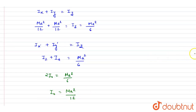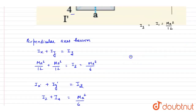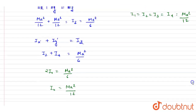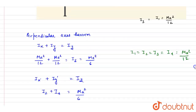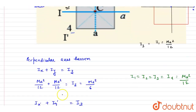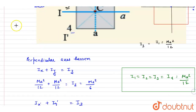So basically I₁ equals I₂ equals I₃ equals I₄ equals ma²/12. The moment of inertia about all four axes — axis 1, 2, 3, and 4 — is ma²/12. Simple, thank you.